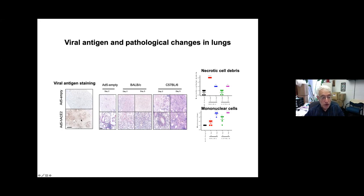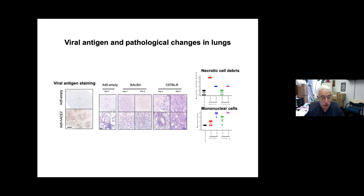Looking at the lungs, virus antigen is found using an antibody to the N protein from John Nichols at the University of Hong Kong, showing virus antigen at many of the places ACE2 is expressed. Histology in both BALB/C and B6 mice shows extracellular infiltrates, some hemorrhage, and edema. These mice aren't terribly sick despite 20% weight loss and they recover. We saw increased necrotic cell debris in BALB/C mice at day two, and mononuclear cell infiltration in both strains at day five post-infection.